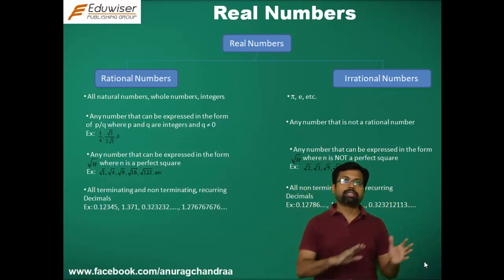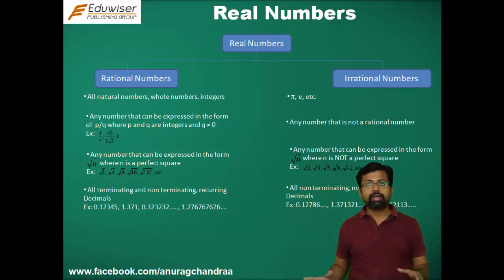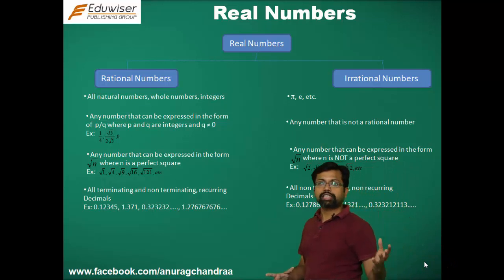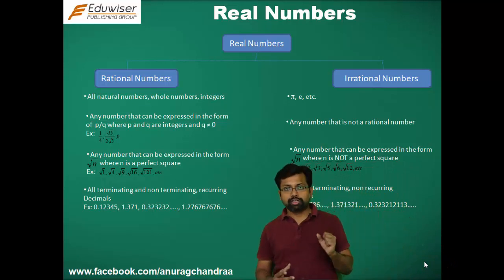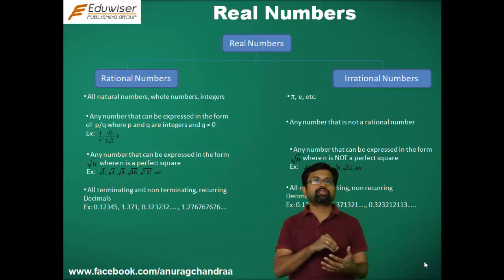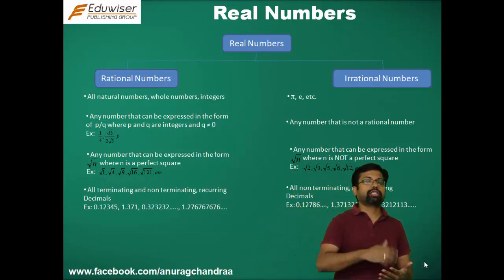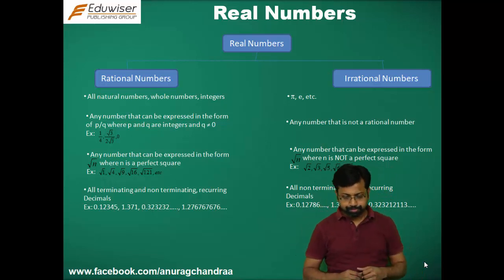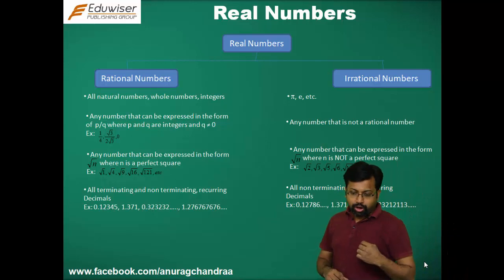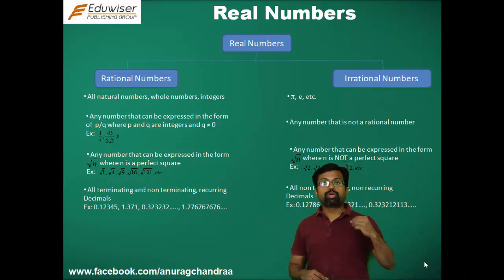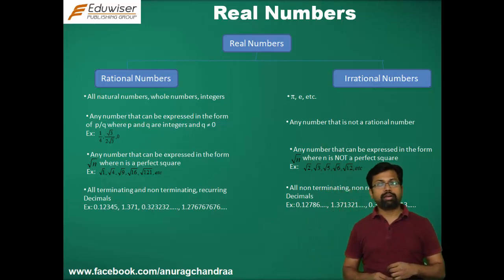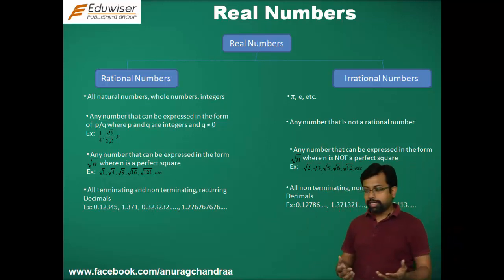If you do not arrive at that form, then the number is irrational. There is no separate definition for an irrational number — any number that is not rational is called an irrational number. The third way is: any number that can be expressed in the form root n, where n is a perfect square, is a rational number.